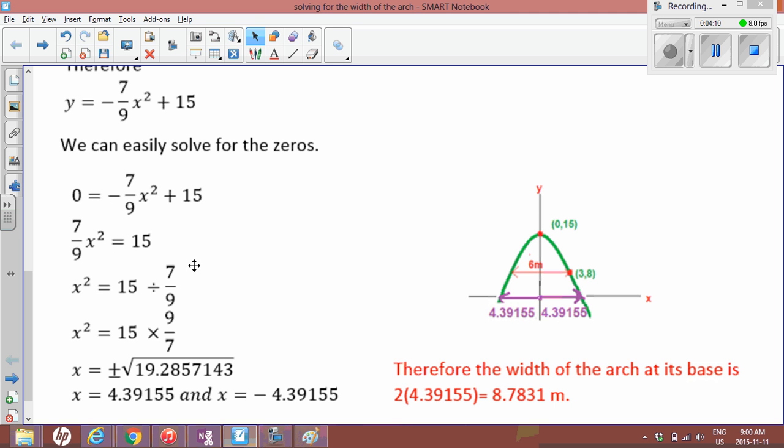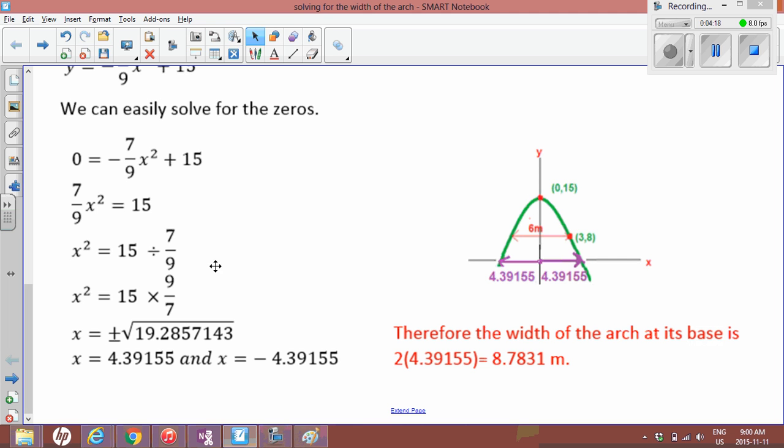So divide by 7 over 9. Then we multiply it because when you're dividing a fraction you multiply by the reciprocal. So 15 times 9 over 7 is actually 19.2857143.